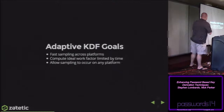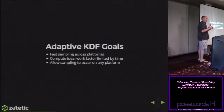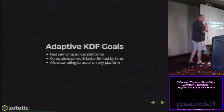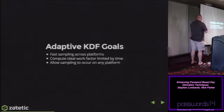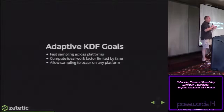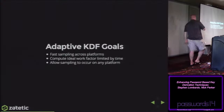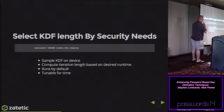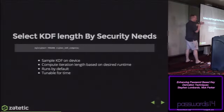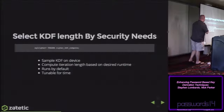Looking at the adaptive KDF goals in the context of PBKDF2: we'd like to provide fast sampling across all platforms — even on that G1 device, we'd like it to be just as fast, relatively speaking. We want to compute the ideal work factor and limit it by time, because ultimately we don't want to take into account various hardware components. We want to allow that sampling on any of our supported platforms. What we came up with is an approach to allow the KDF computation to run automatically on the device, constrained by time. We have a default value, and it's tunable.